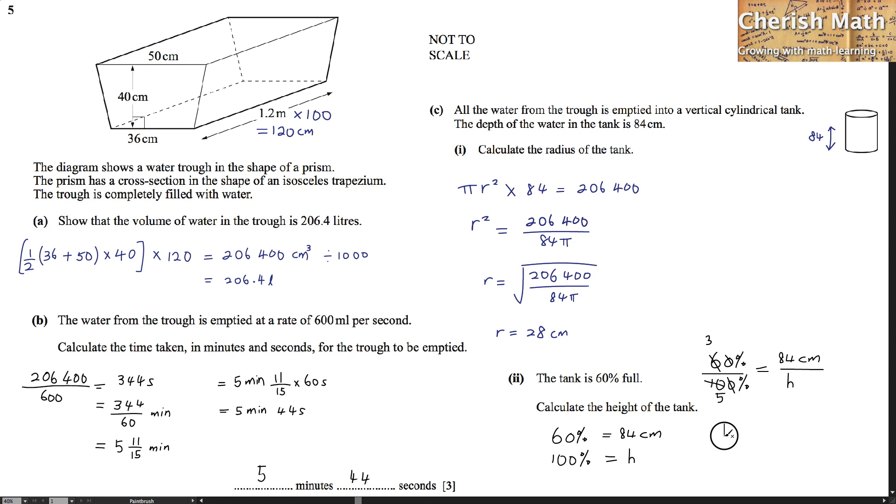So, the value of h is, in fact, cross-multiply the values will be 5 times 84 divided by 3. The value of h is 140 cm. And this is our answer.